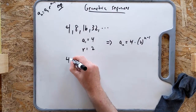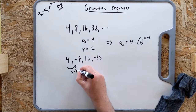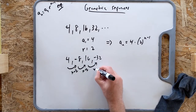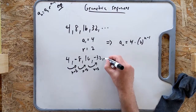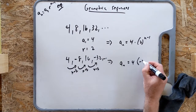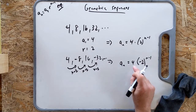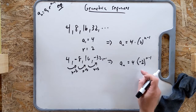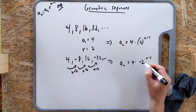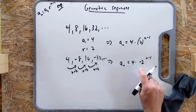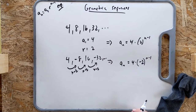The parentheses are important because without them it looks like either 4 minus 2 to the n minus 1, or more problematically, 4 times negative (2 to the n minus 1) — you'd do 2 to the n minus 1 first and then put the negative sign on the front, which is not what we want. If you do it in the calculator, make sure it looks like (-2) to the n minus 1.